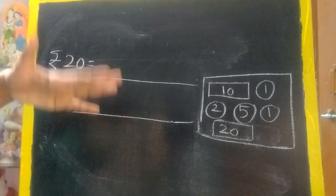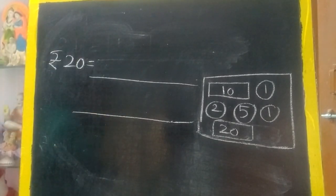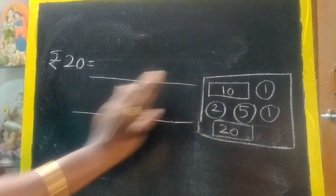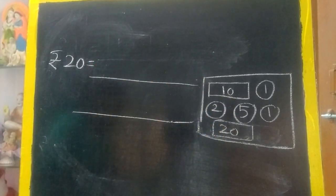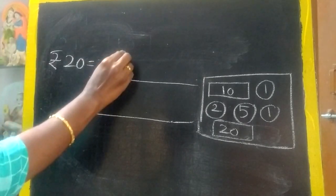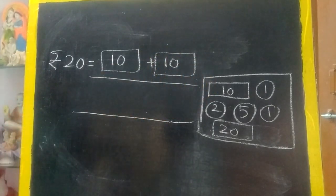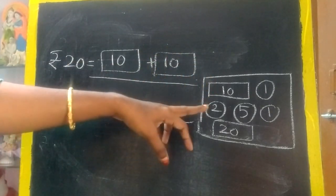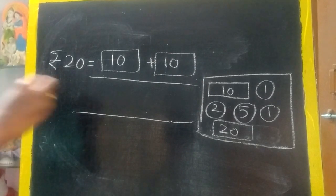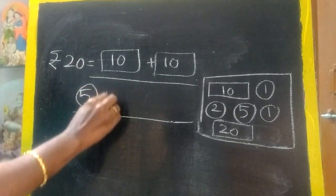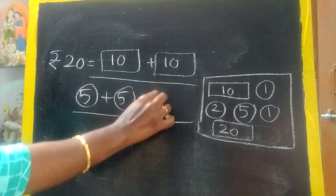Next is 20 rupee. There are so many ways. Just I will show 2 ways. One is we can give the 20 rupee note itself. We can give directly. Suppose if you don't have 20 rupee note, what you will do? 10 plus 10 makes 20, right? 10 rupee note plus 10 rupee note. Suppose you don't have 10 rupee note also. Only 5 rupee. How many 5 rupee you will add? 5 plus 5 plus 5 plus 5.